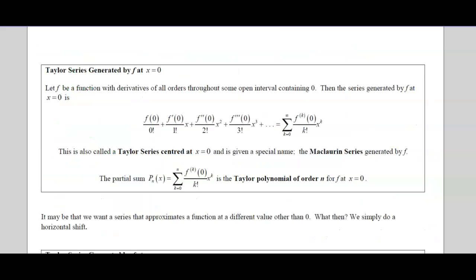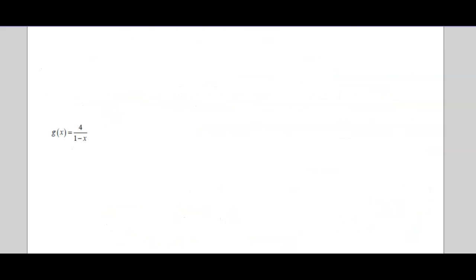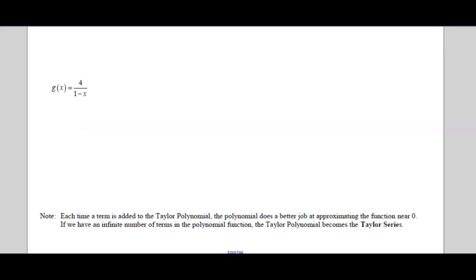Okay, so we've done those. The bottom, it says each time a term is added to the Taylor polynomial, the polynomial does a better job at approximating the function near zero. So all of these are near zero, but it's going to be closer. On Desmos it looks exactly the same. If we had a more accurate graph, it may not be quite as close as you move away from zero, but it's going to get better and better the more terms that you get. So if we have an infinite number of terms in the polynomial function, it really becomes the Taylor series.